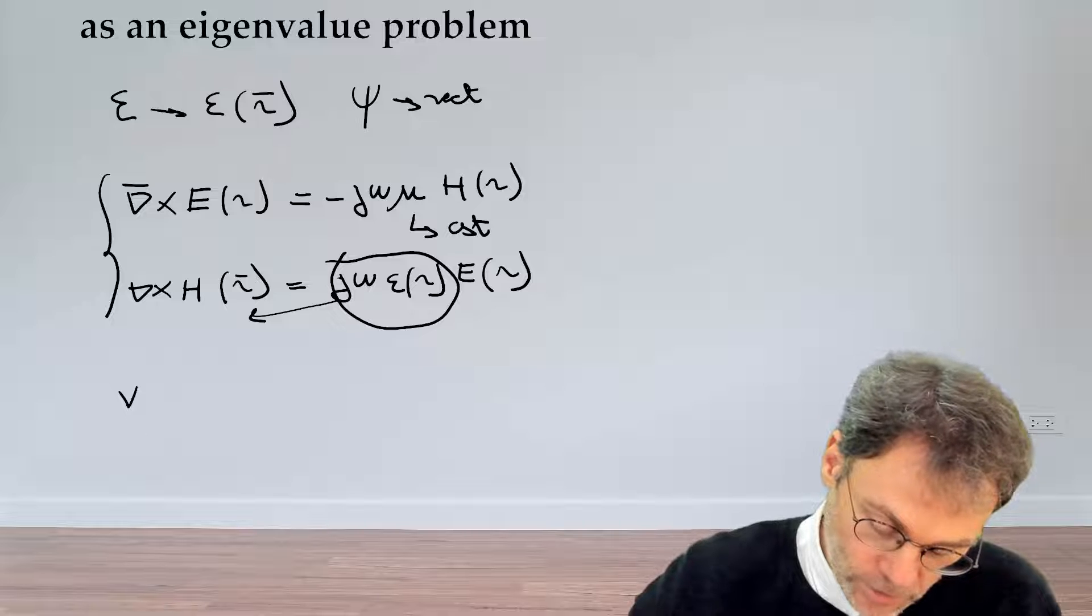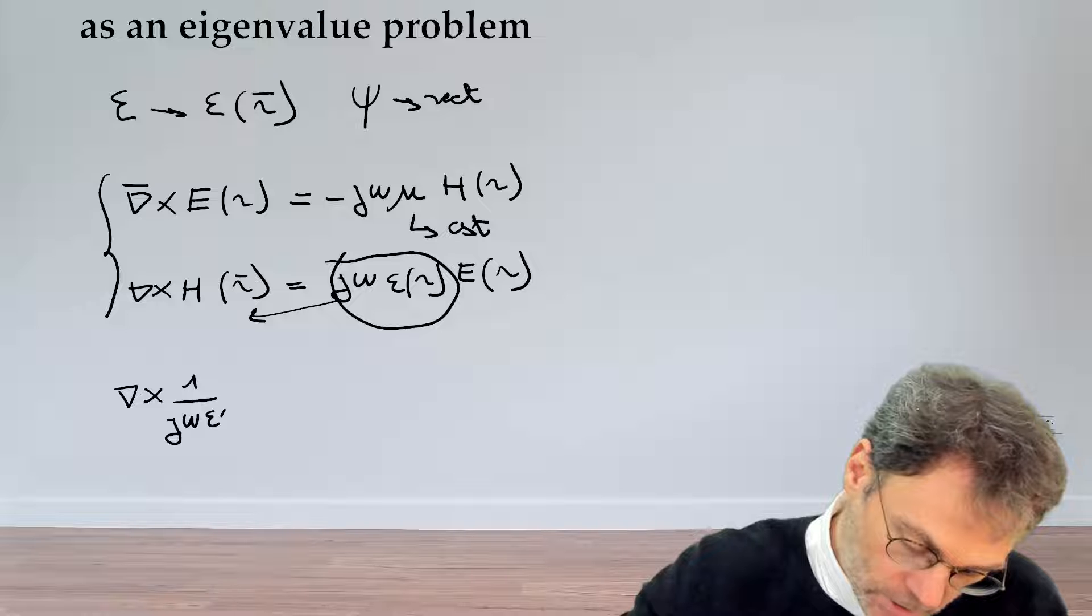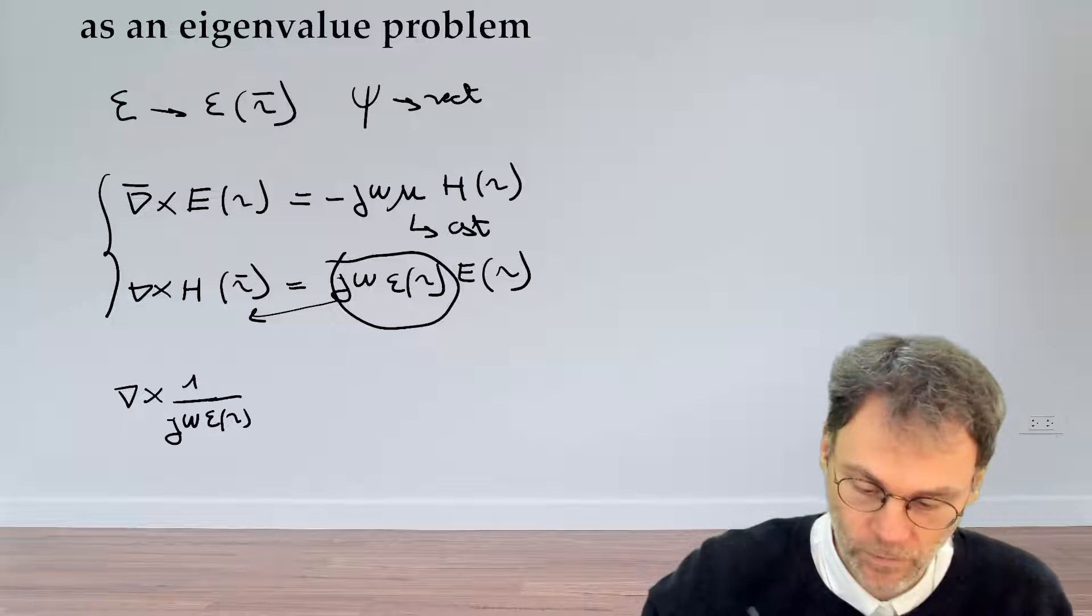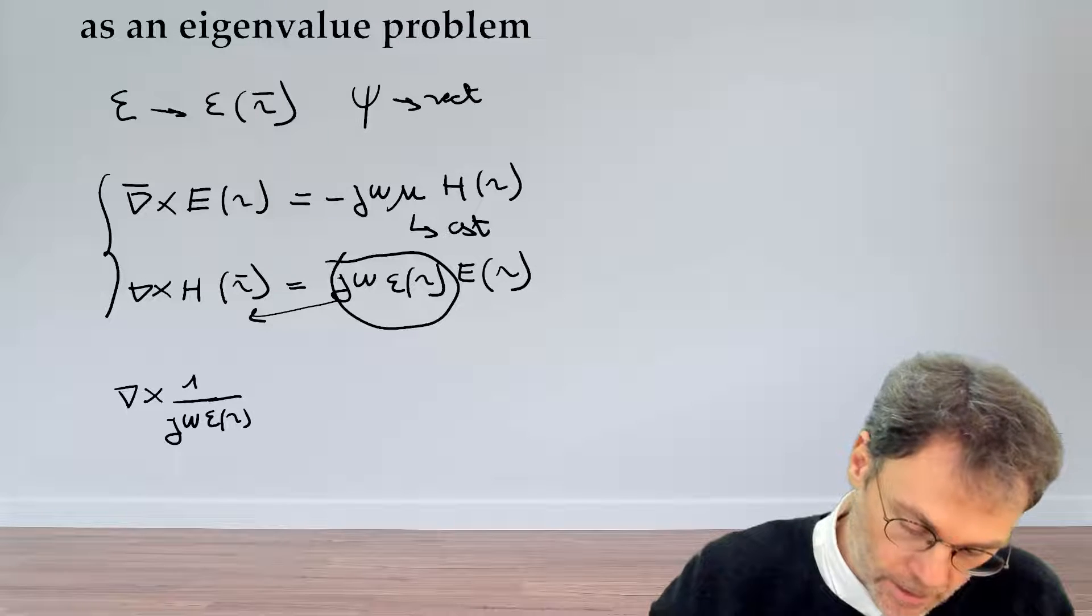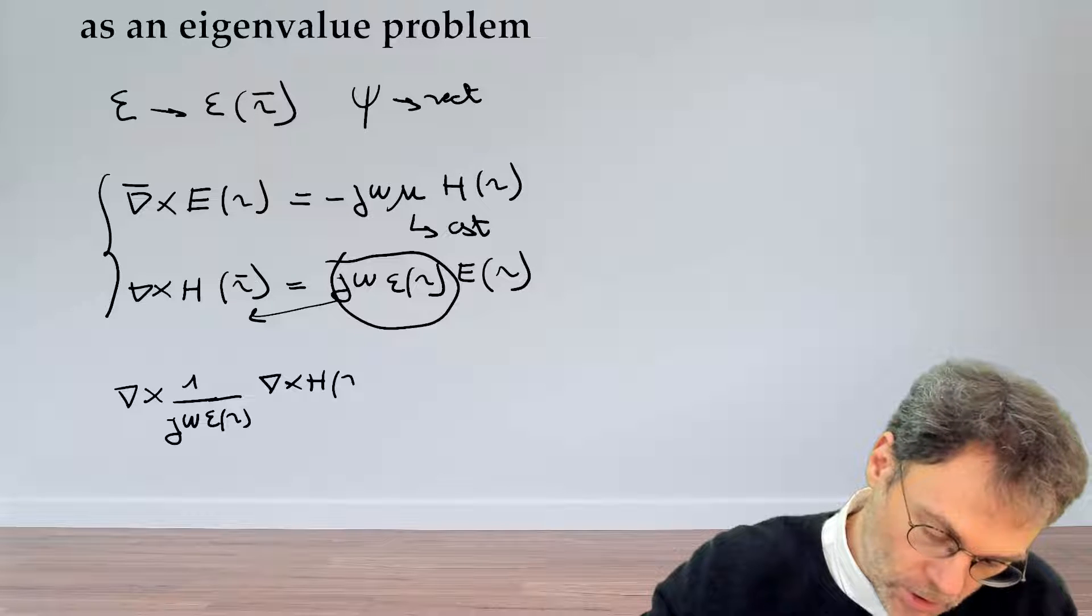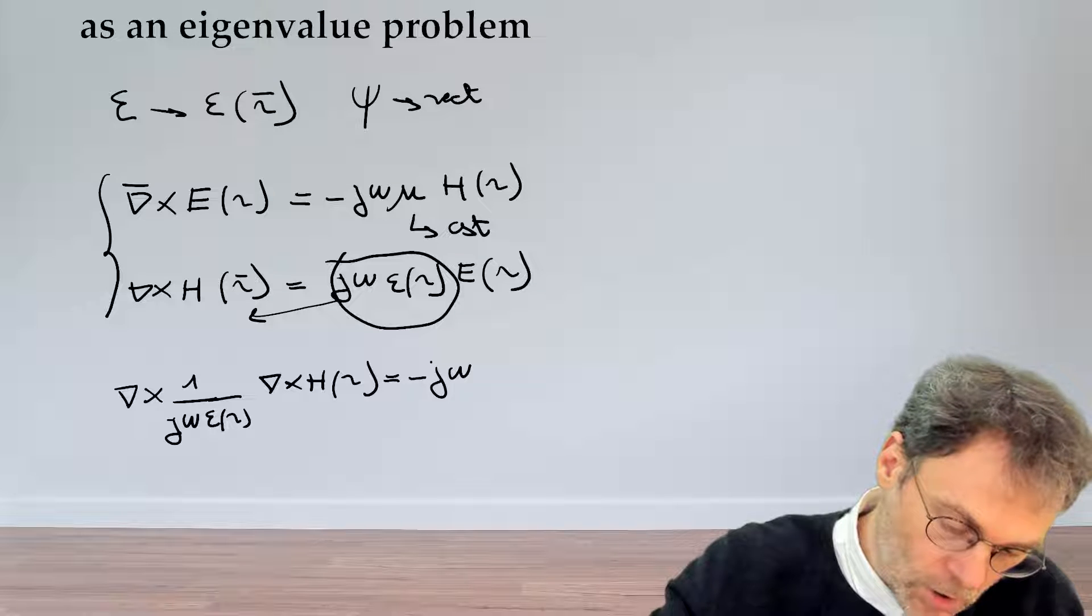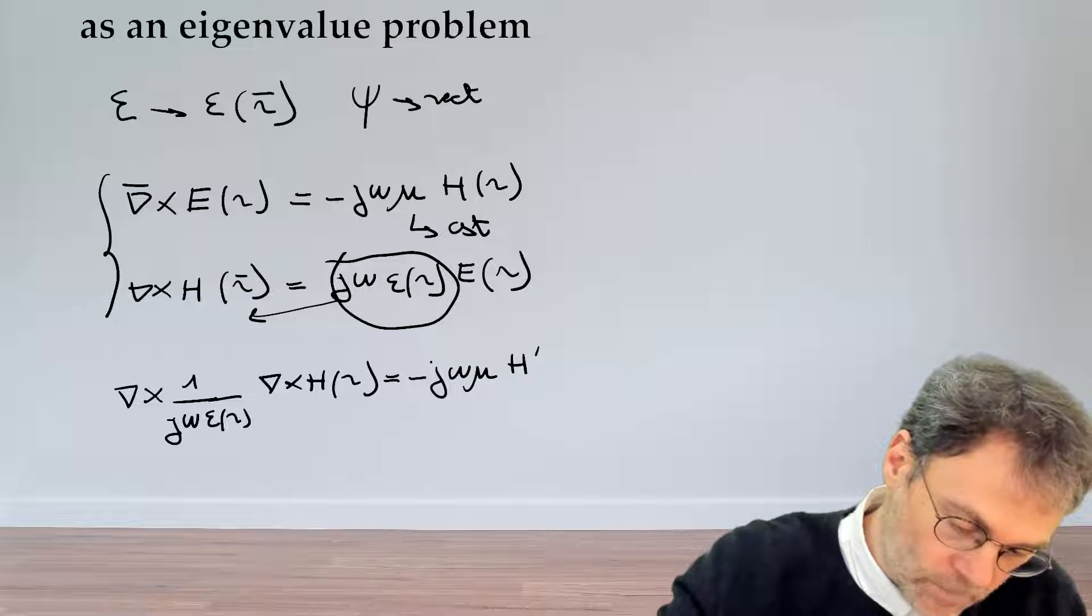So we have the curl of the electric field, which is going to be one over j omega epsilon as a function of R, and then we have curl H of R. And then this is equal to minus j omega mu magnetic field.